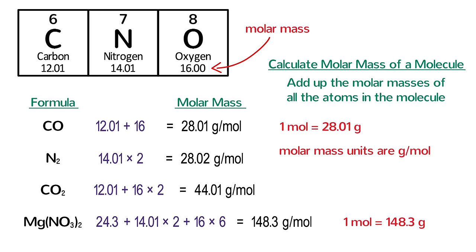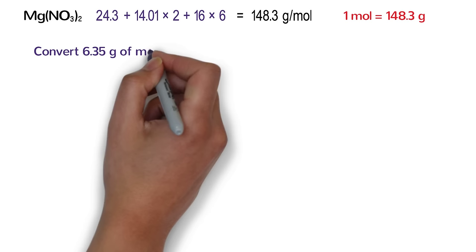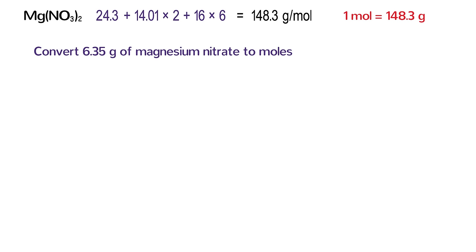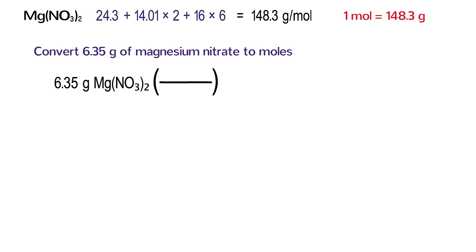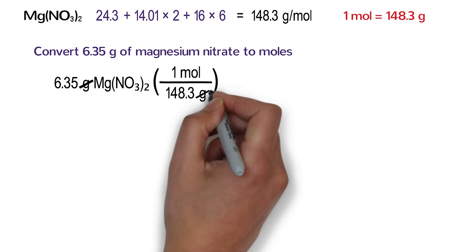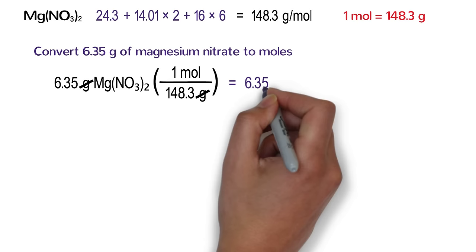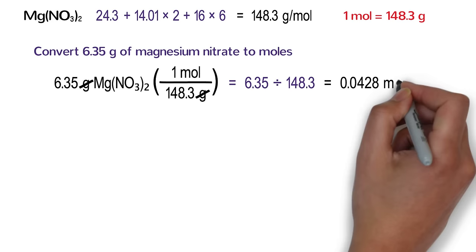So let's use this molar mass to do some mole conversion problems. Let's convert 6.35 grams of magnesium nitrate to moles. We will solve this problem in exactly the same way that we converted grams of lithium to moles of lithium. First, write down the quantity that we know: 6.35 grams of magnesium nitrate. Next, multiply this by a conversion factor fraction. The molar mass of magnesium nitrate is our conversion factor. Because we started with grams, write 148.3 grams on the bottom. Because we are solving for moles, write one mole on the top. Grams on the top and bottom cancel out. In your calculator, type 6.35 divided by 148.3. This works out to be 0.0428 moles of magnesium nitrate.